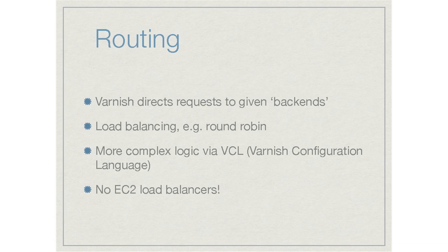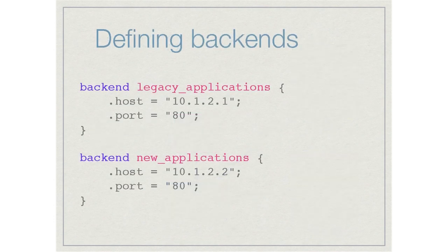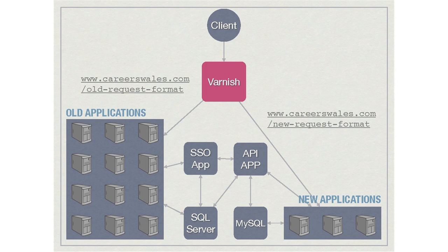Varnish also does routing — it can direct requests to given backends, do round-robin, or handle more complex logic via VCL. A side benefit is we didn't need any EC2 load balancers — we do it all in Varnish. We have a legacy applications backend and a new applications backend. A regex match in the Varnish configuration checks incoming URLs: if it matches the old CMS request format, it goes to the legacy applications backend; if it matches the new format, it goes to the new Symfony 2 stack. This is how users never know which stack they're hitting.